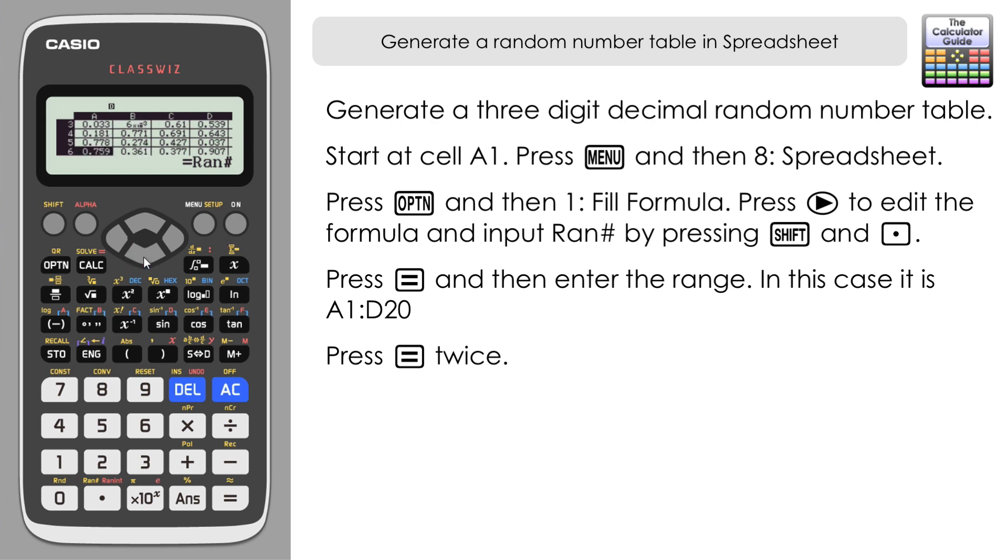In B3 we've got 6 times 10 to the power of minus 3, so that's essentially 0.006. Scroll down, we can see that we've got some further values here. C7, 4 times 10 to the minus 3 and others there.